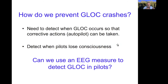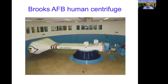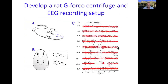G-LOC first became a problem when fast maneuverable jets like the F-16 were deployed, and has only gotten worse with the newer generation F-22s and F-35s that are more maneuverable and can expose pilots to much higher G-forces. To prevent G-LOC and subsequent plane crashes, we asked: can we use an EEG measure to detect G-LOC in pilots? You put a fighter plane module or astronaut capsule on the end of a large centrifuge, spin them at high speeds, and that produces force from head to toes resulting in ischemia at the brain level. Given budget constraints, we scaled down to a centrifuge that fit a rat and implanted electrodes in the rat's skull to obtain high-fidelity EEG.